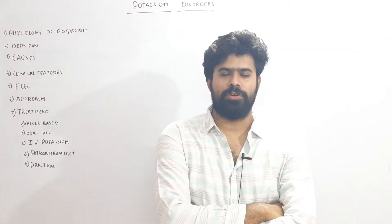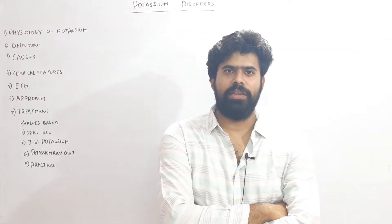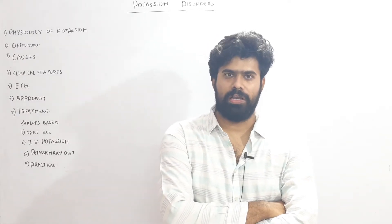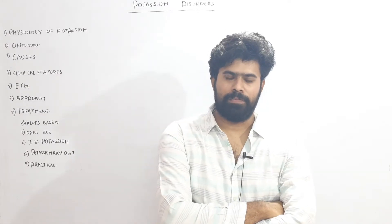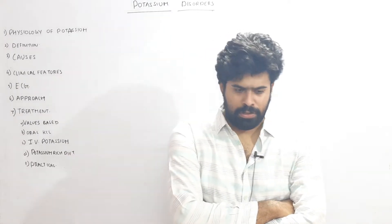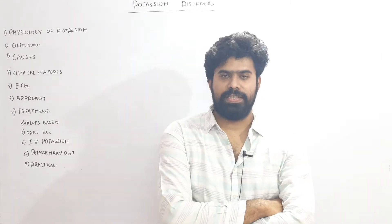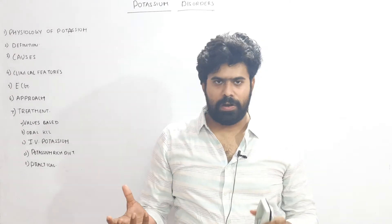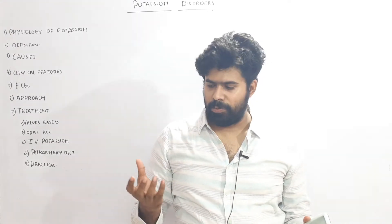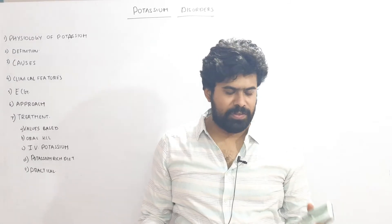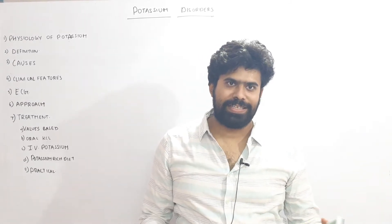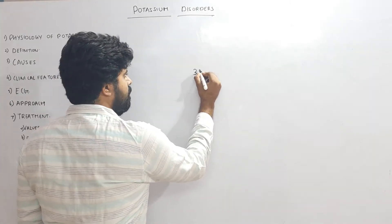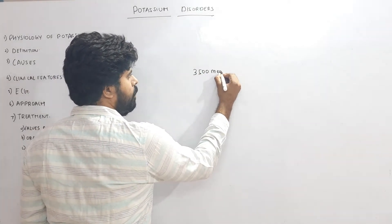Welcome back to Dr. Talks. Today we will be dealing with potassium disorders — this will be a two-part discussion. First will be a hypokalemia discussion and second will be hyperkalemia. So what is potassium? Potassium is the major intracellular cation. There are two types of ions — intracellular and extracellular. Potassium is the major intracellular ion, and sodium is one of the most important extracellular ions. The total body potassium stores are approximately 3000 to 3500 milliequivalents.